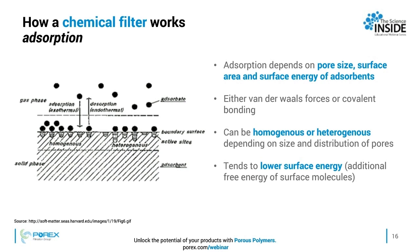The adsorption process can be a very homogeneous or very heterogeneous process. It all depends on the size and distribution of the pores. For example, if you want to target a very specific type of gas molecule to be removed from a stream, we can design a structure that is much more homogeneous and removes just that particular gas. But if you want a mixture of gases removed, we can choose other materials to make it a more heterogeneous process.